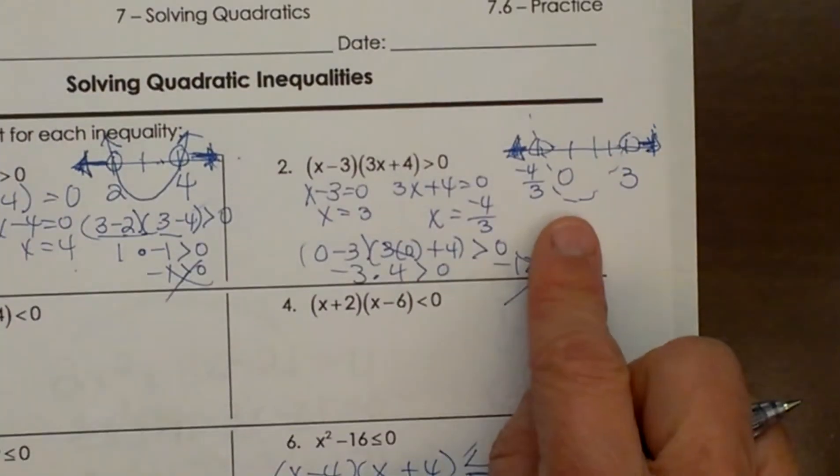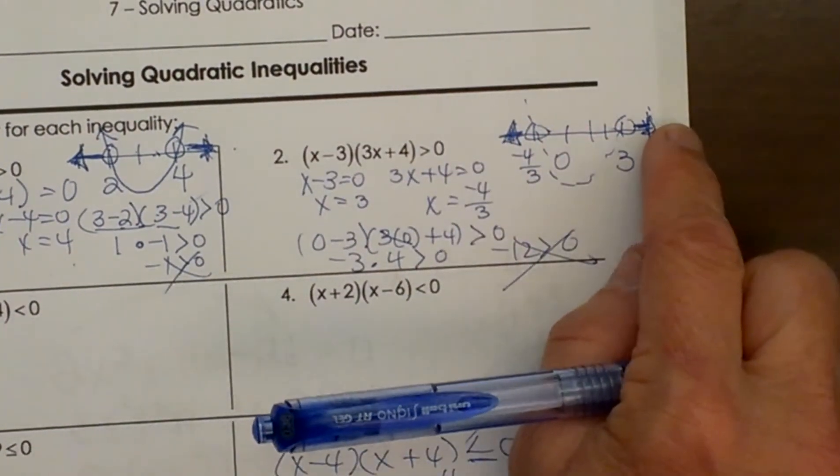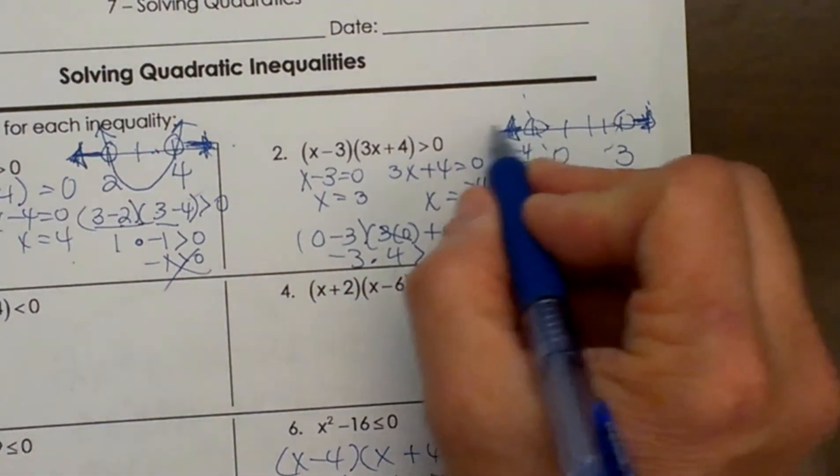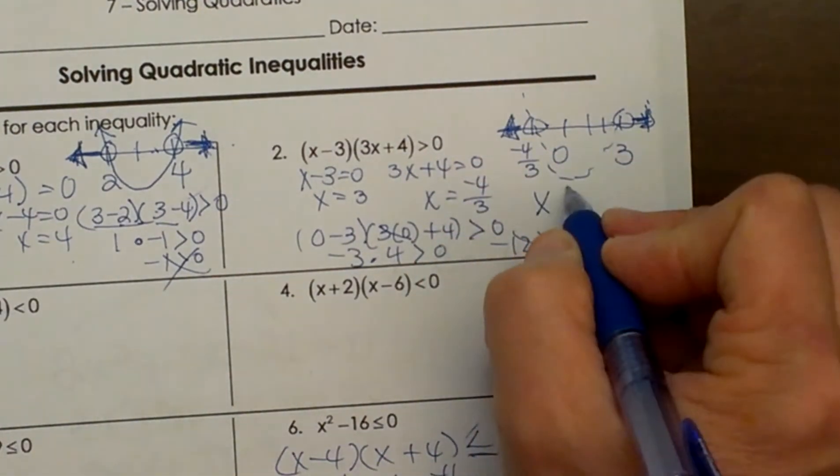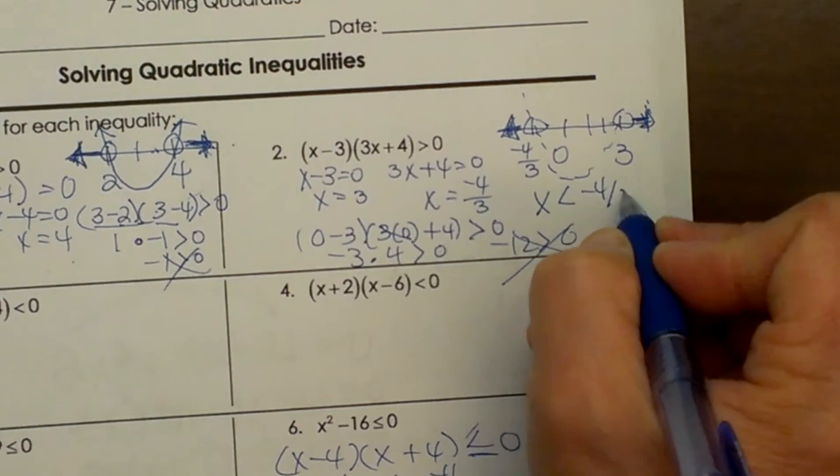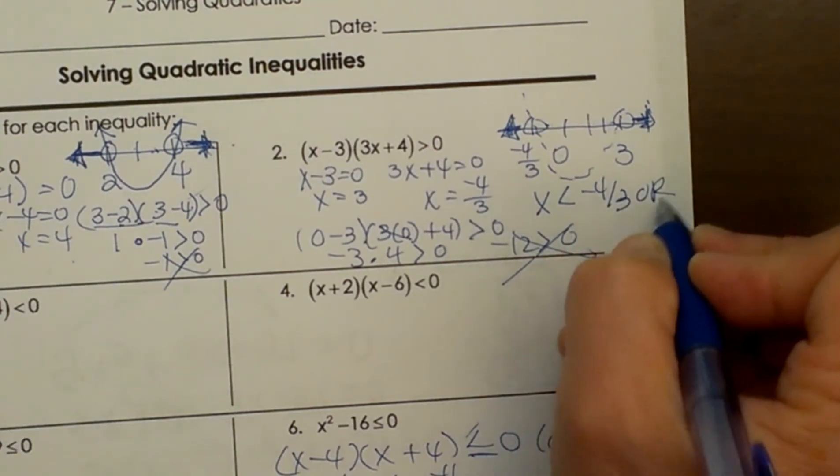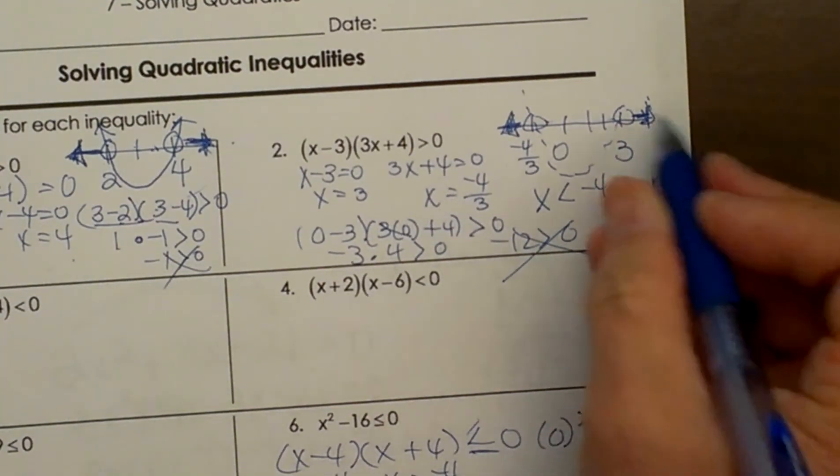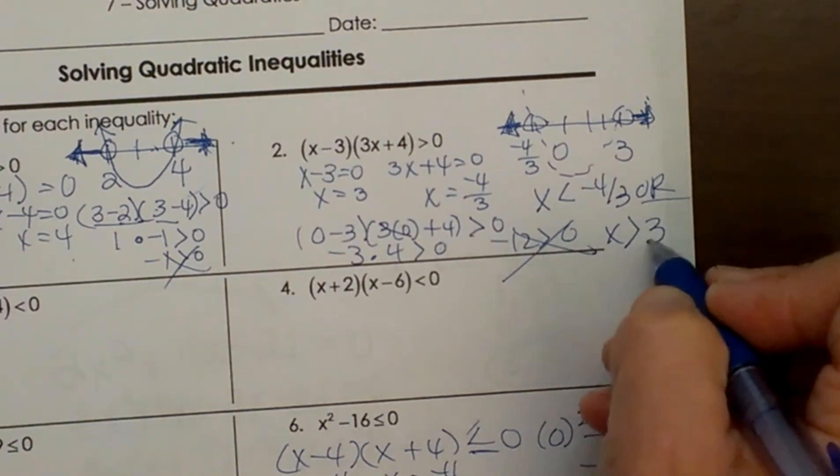Let's go back up here and look at this one. This one has two parts so you can have two inequalities. This side is written as all the x is less than negative 4 thirds or all the x's that are this side would be greater than 3.